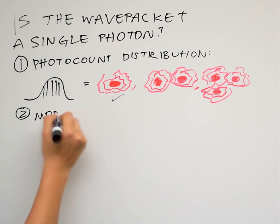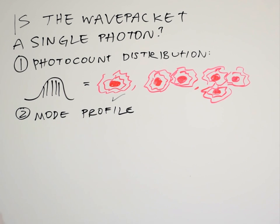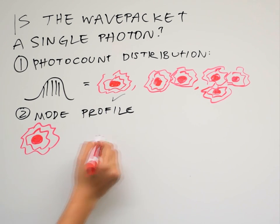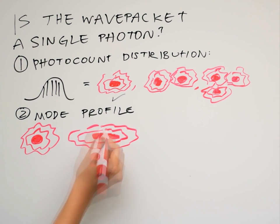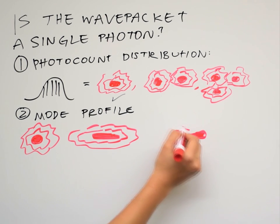Two, the mode profile. How is the energy distributed? The energy could be in a nice sphere, or an oval, or a dumbbell, or actually any shape at all.